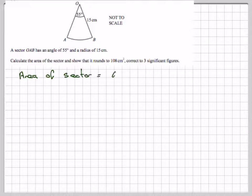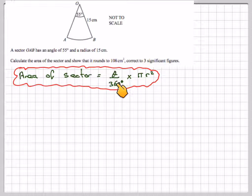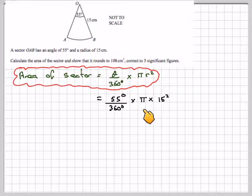The area of a sector is the angle at the centre divided by 360 times pi r squared. So the angle is 55, it's going to be 55 over 360 times pi times the radius of this complete circle, which is 15 squared.